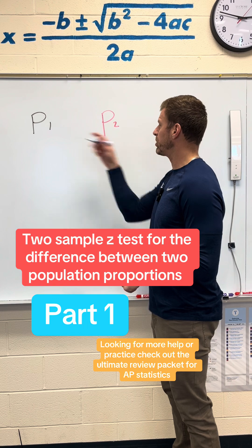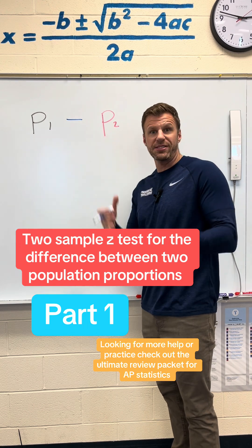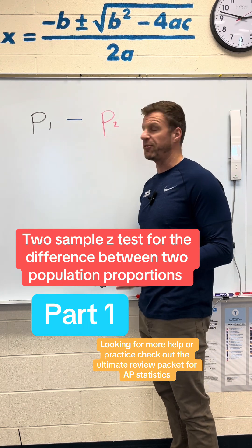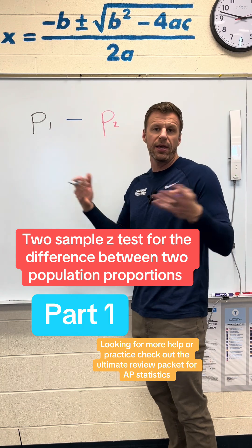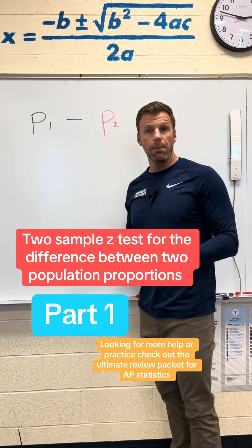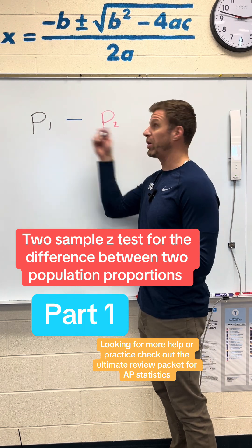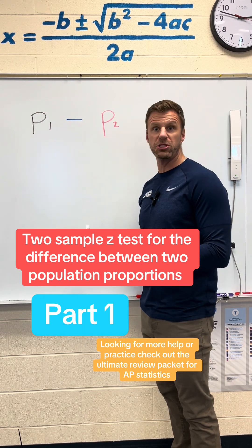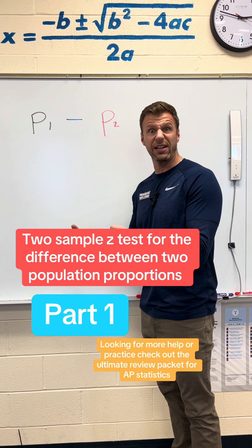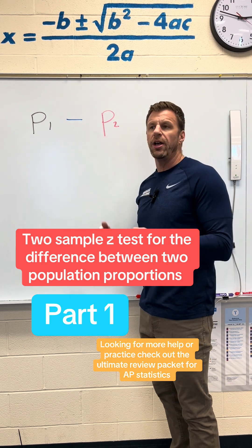Anytime we look at two things, we naturally care about the difference. Is there a difference? If there's no difference, then they're the same and we're going to get a difference of zero. But if the proportion of men is bigger, we're going to get a positive number. If the proportion of women is bigger, we're going to get a negative number if we do it in this order.